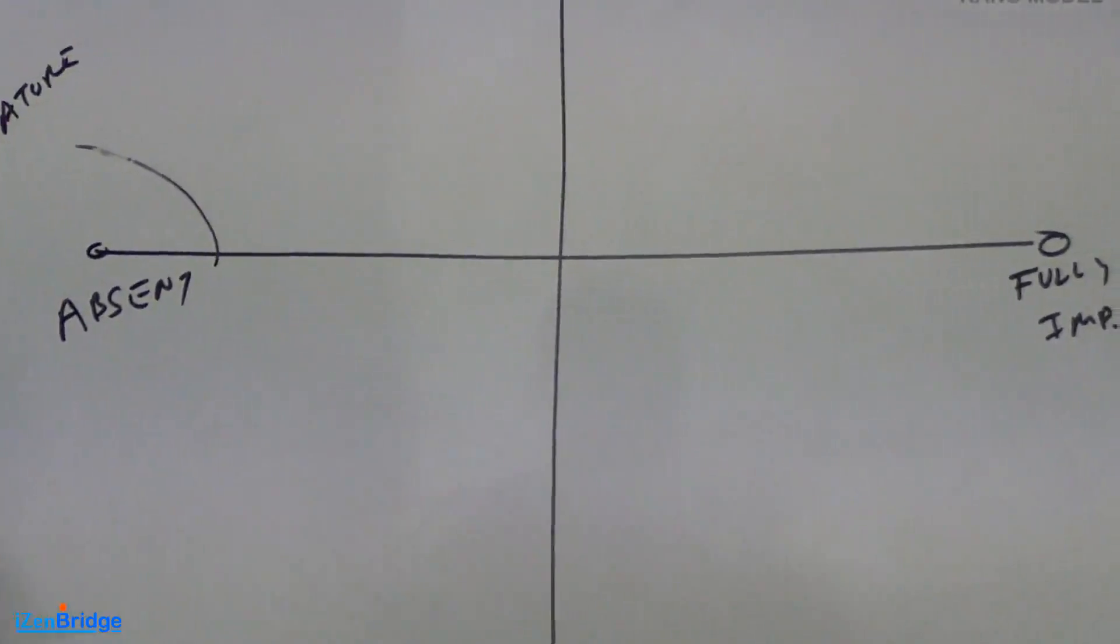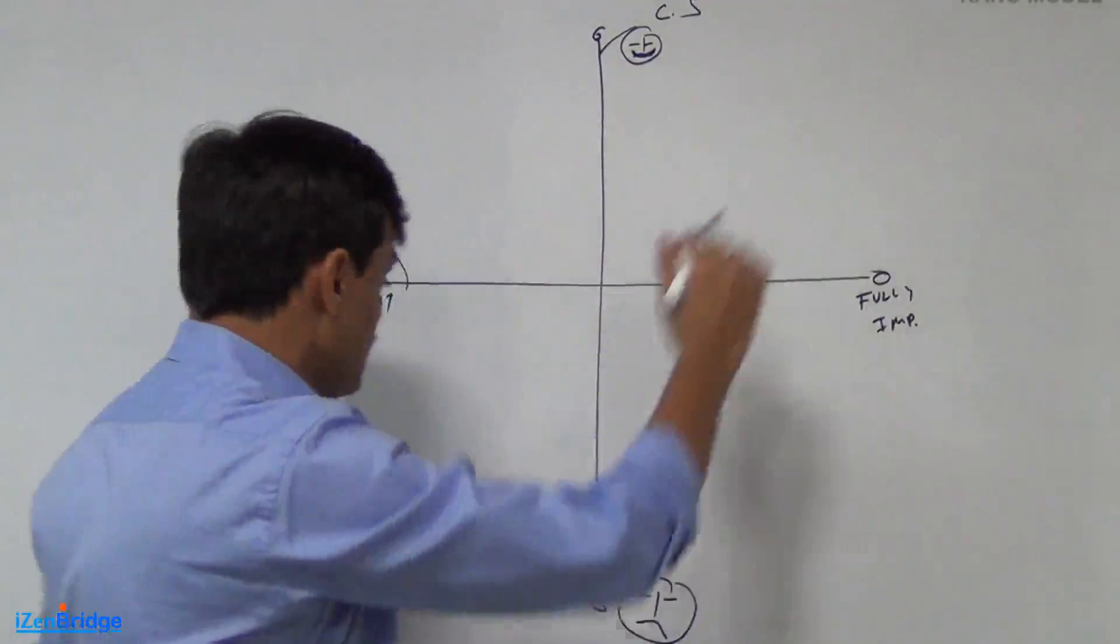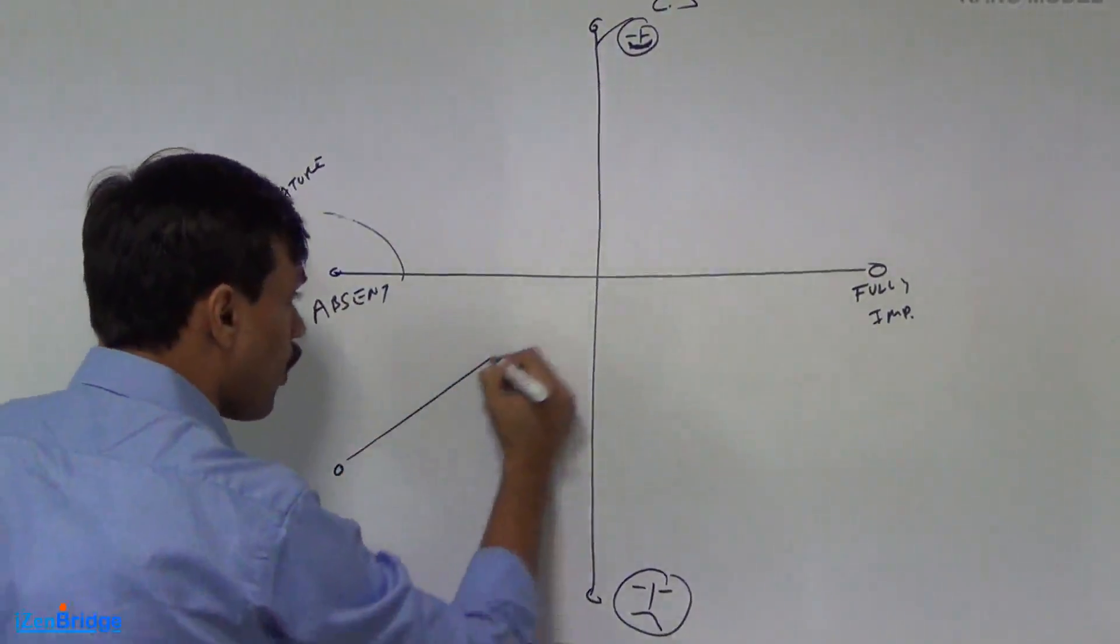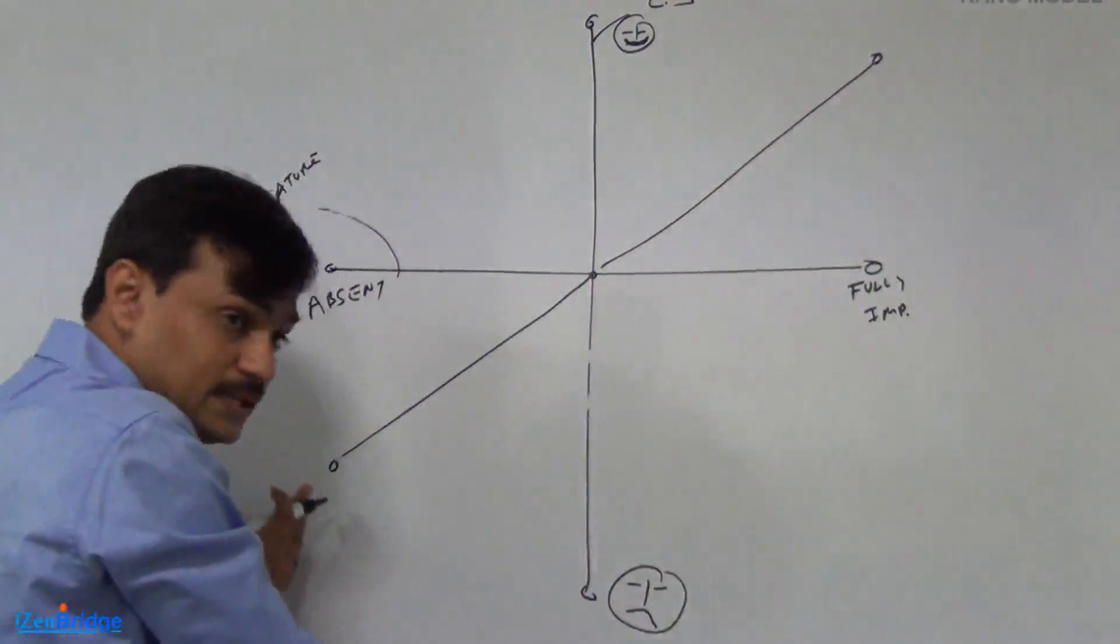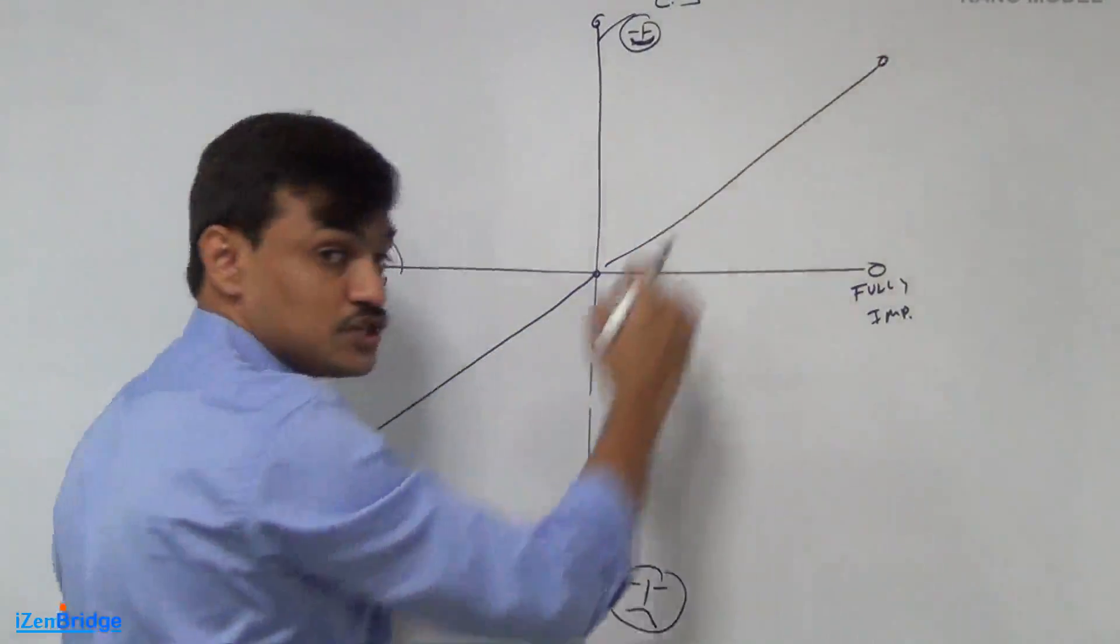Now, there are types of features. As much you implement them, the customer satisfaction will increase. These type of features are called linear features. In this category, as much you build up, customer satisfaction will start increasing.